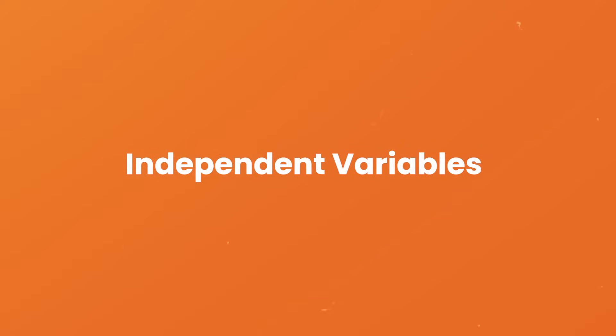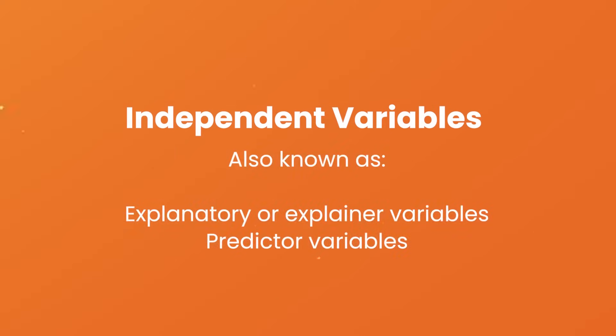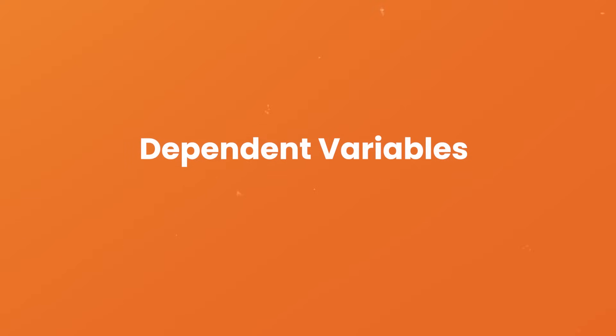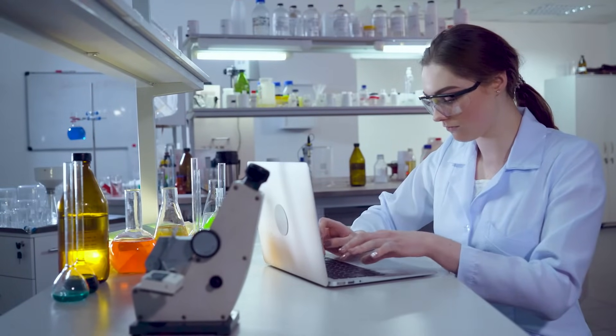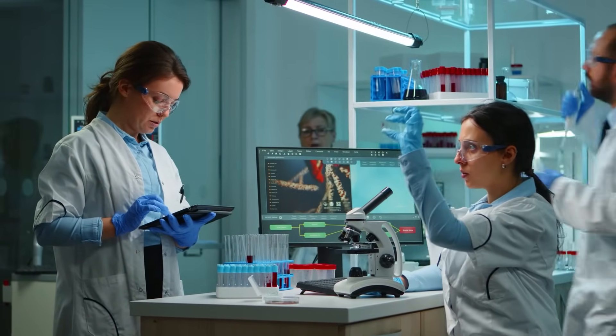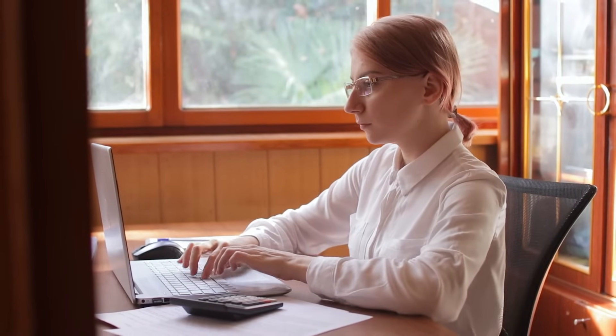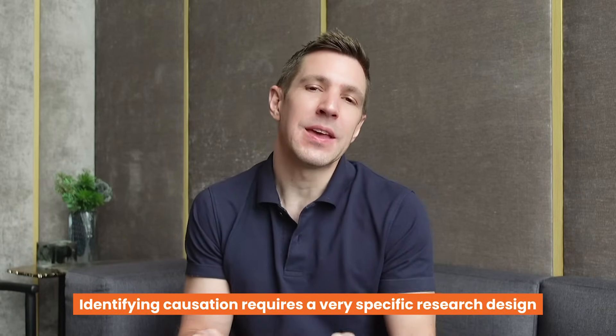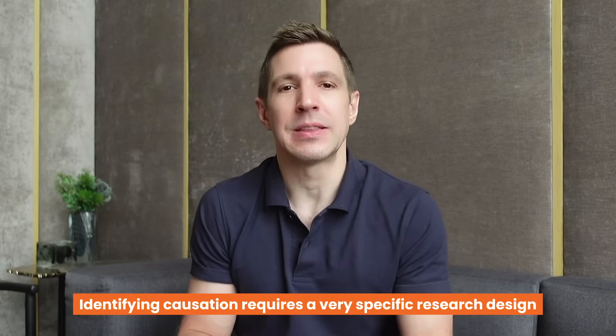It's useful to know that independent variables can go by a few different names, including explanatory variables — because they explain an event or outcome — and predictive variables, because they predict the value of another variable. Similarly, dependent variables are sometimes referred to as response variables or outcome variables, so don't be surprised if you see slightly different terminology used across various studies. Within scientific studies, researchers will carefully measure any changes to the dependent variable in response to changes in the independent variable. That said, it's not always easy to be 100% sure that the independent variable is the actual cause of any given change, as there could be other variables at play during the study.